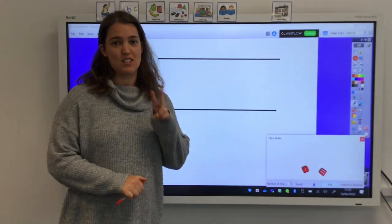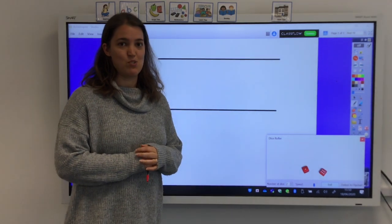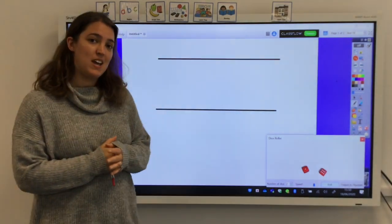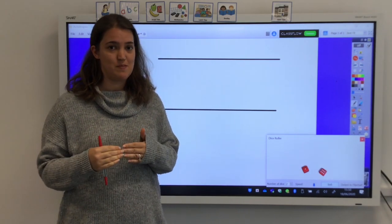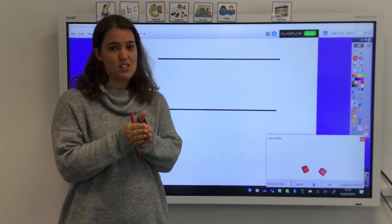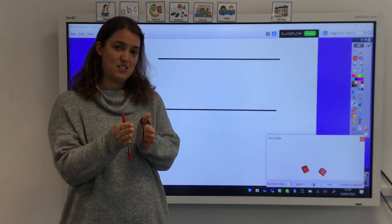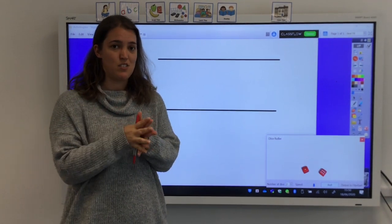So there's two ways that you can extend this game if you want more challenge. One way is to add in an extra dice, and instead of rounding to 10, you can round to the nearest 100. And remember, if you're rounding to the nearest 100, you would look at the tens digit to determine whether you round up or down rather than the units.